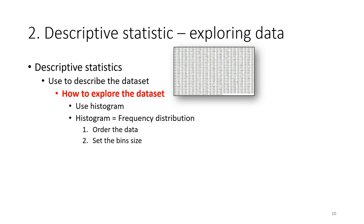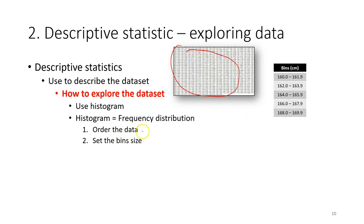The way to make a histogram: first, you need to order all the data from smallest to largest. Then you set the bin size. These are the bins — each bin is a range. For example, the first bin consists of observations with values between 160 and 161.9, the second bin covers 162.0 to 163.9, and so on. The number of bins depends on the bin size and the minimum and maximum values of your data set.